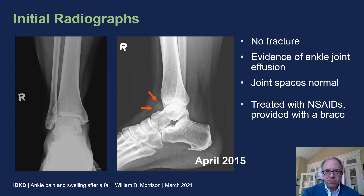Initial radiographs show no fracture. There is soft tissue swelling, and you can see this swelling at the anterior margin of the ankle joint suggesting an underlying ankle joint effusion. However, the joint spaces were preserved.